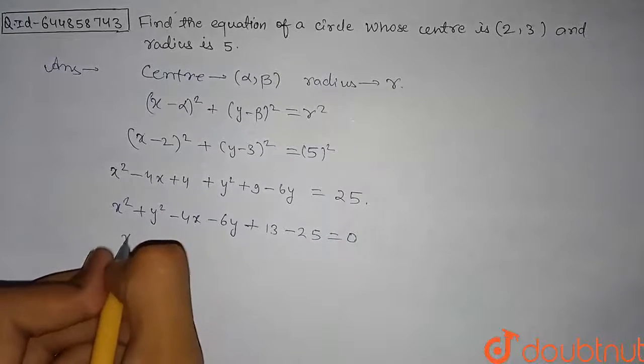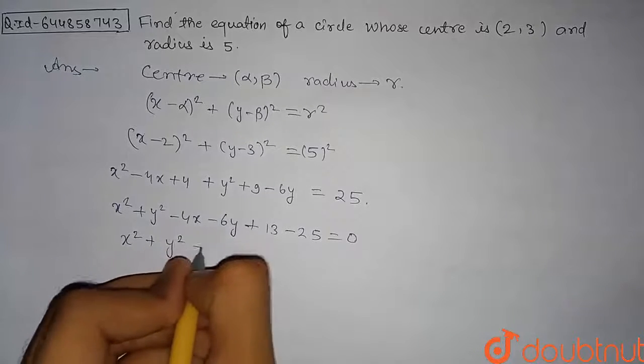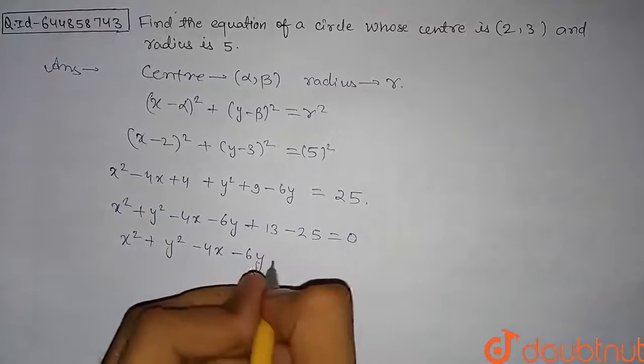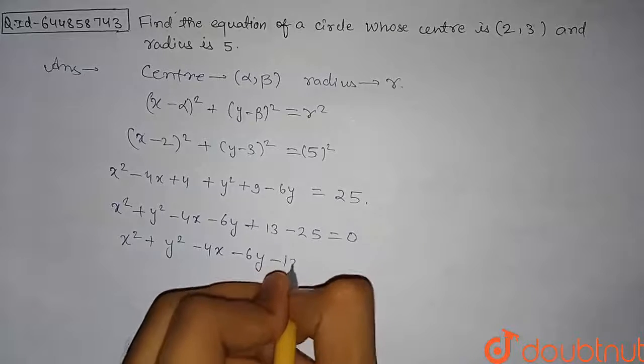x² + y² here will be -4x, here will be -6y, and here will be 13 - 25 which is equal to -12, so this is equal to 0. So basically the answer to this question is this equation.